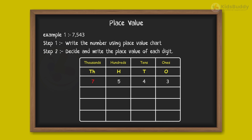The number 7 is in the thousands column, so its place value is 7 into 1000, which is equal to 7000. The number 5 is in the hundreds column, so its place value is 5 into 100, that is 500.